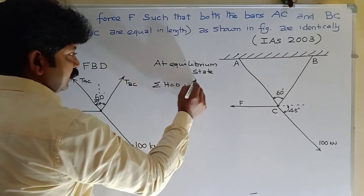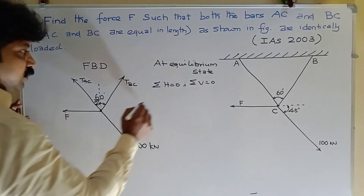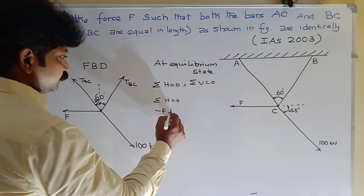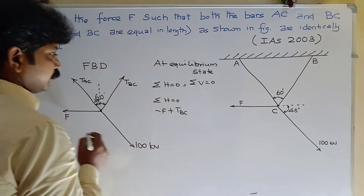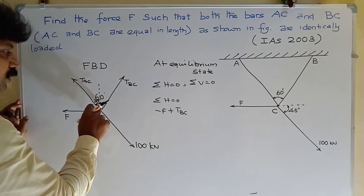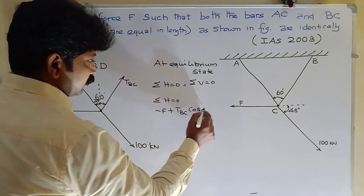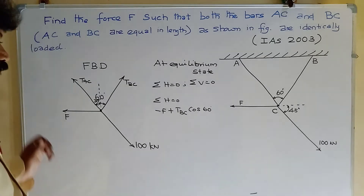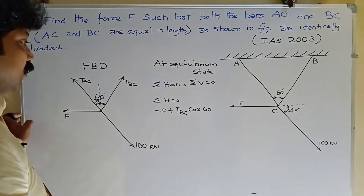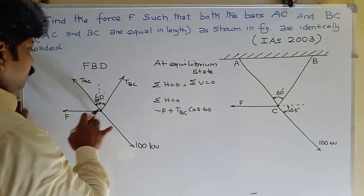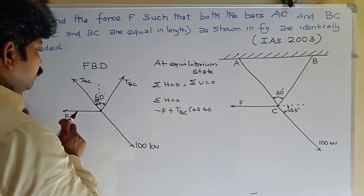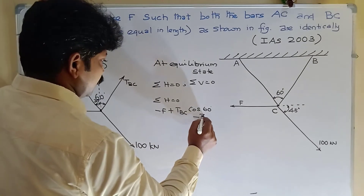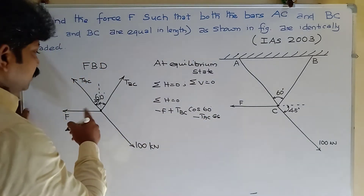At equilibrium state, applying sigma H equal to 0: minus F plus TBC cos 60 minus TAC cos 60 equals 0.